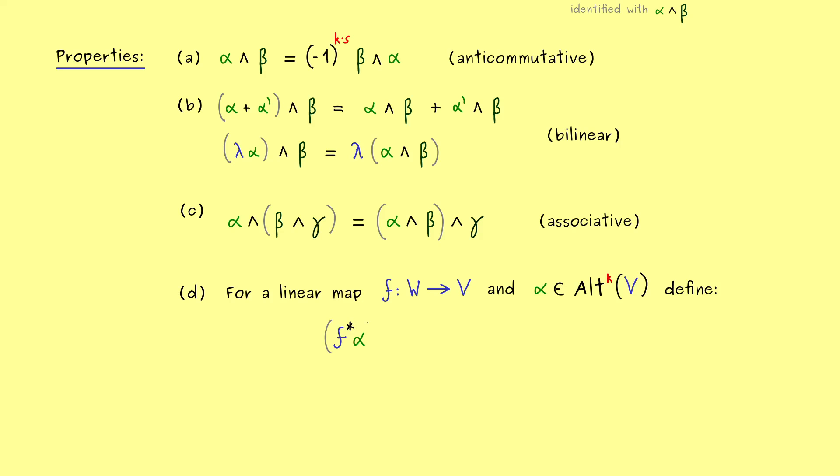And the usual name one chooses for that is f*. More concretely, f* alpha is the new alternating form. And in fact, it's often just called the pullback of the alternating form.